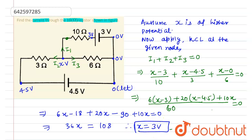Now we have to find the current i. Since x is also 3 volt, the potential over here is 3 volt and potential over here is also 3 volt.